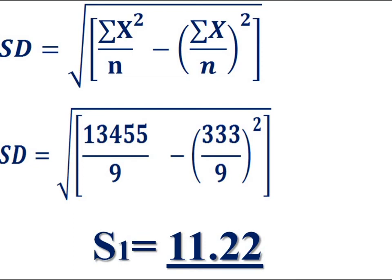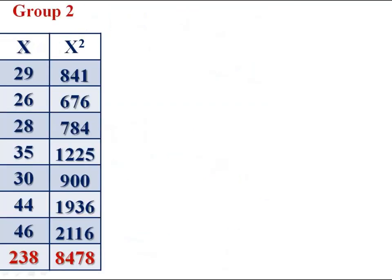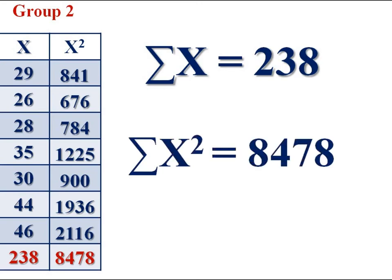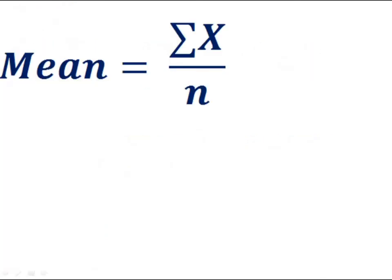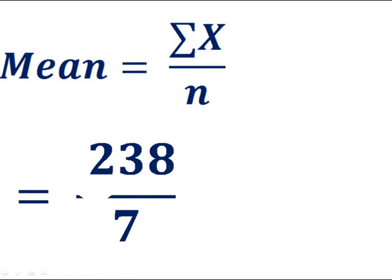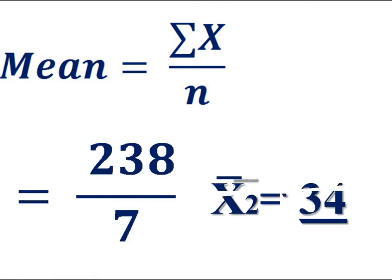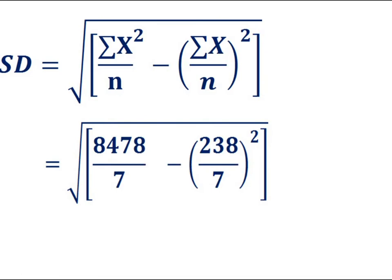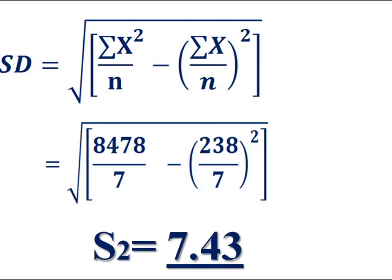Similarly, compute the mean and standard deviation of the second group. For Group 2, x and x square: summation of values, sigma x is equal to 238; summation of square values, sigma x square is equal to 8478. Find arithmetic mean: mean equals sigma x by n, that is 238 divided by 7, so x bar 2 is equal to 34. Find standard deviation of the second group: square root of 8478 divided by 7 minus (238 divided by 7) all squared. We get standard deviation of the second group, S2 equals 7.43.